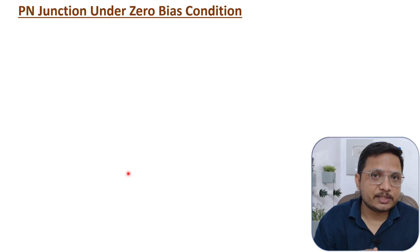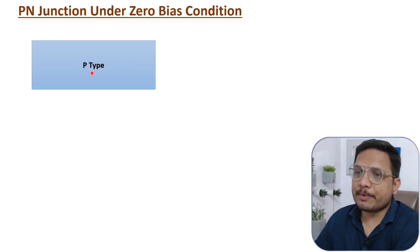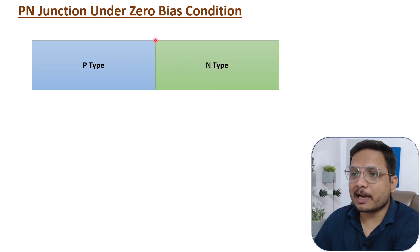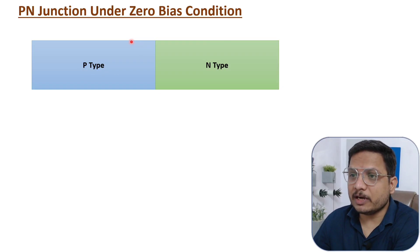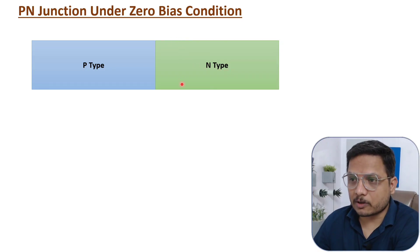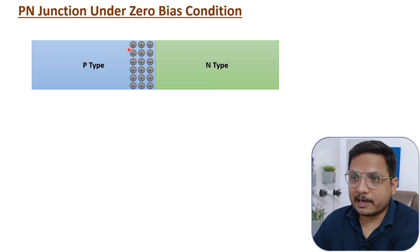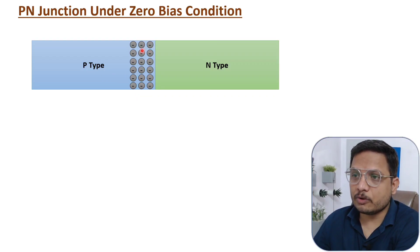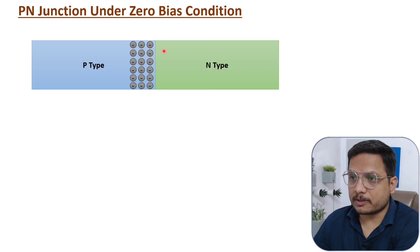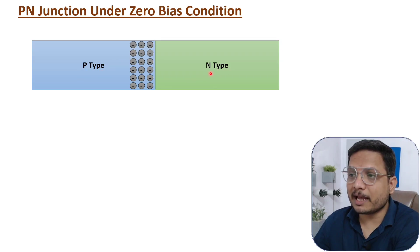Now I'll explain what happens when we diffuse P and N material together at the junction, which is referred to as the PN junction. Here we have P-type material and N-type material getting diffused. At the junction, interesting things happen. At the P-type side, majority carriers are holes, which have a tendency to accept electrons. At the N-type side, majority carriers are free electrons. At the junction, at the P side, there will be formation of negative ions, because holes are getting diffused with electrons from N-type — the holes accept electrons, forming negative ions.